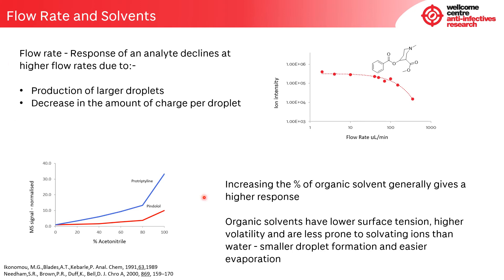Increasing the percentage of organic solvent in electrospray generally gives a higher response. Organic solvents have low surface tension, higher volatility, and are less prone to solvating ions than water. This leads to smaller droplet formation, easier evaporation, and an increase in the number of ions in the gas phase. The figure at the bottom shows the response of two compounds, protriptyline and pindolol, against an increase in the percentage of acetonitrile in the eluent, with the response of both compounds normalized to their response in 100% water. Both show a large increase in signal as the percentage of acetonitrile goes up, but as can be seen, the effect is very compound dependent.